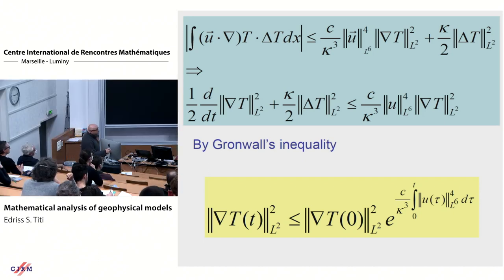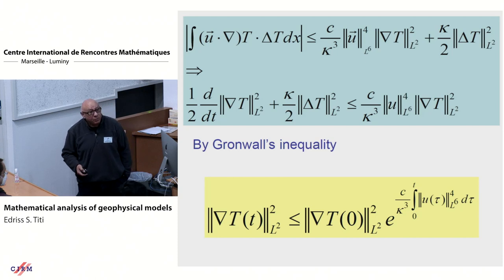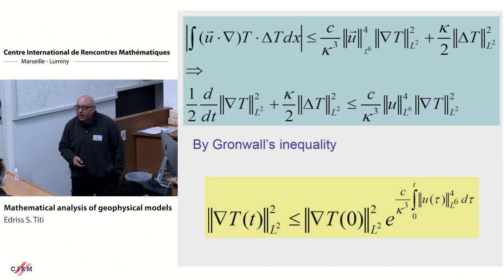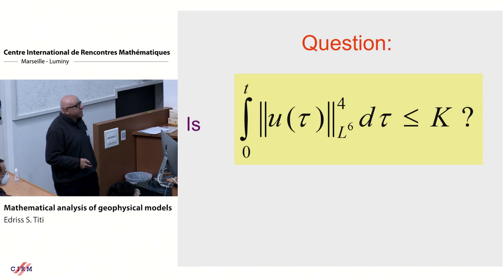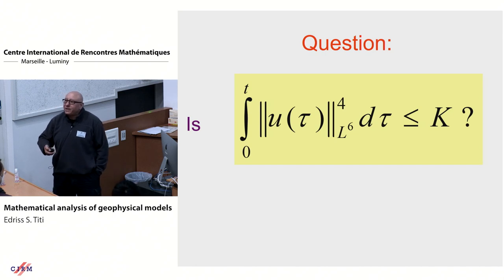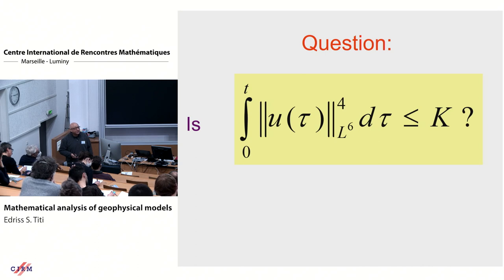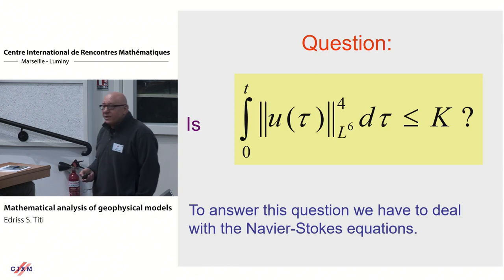Who tells me this exponent is finite? In order to show the temperature is bounded, there was no problem. But to show the gradient of the temperature is under control, I need to deal with the transport part — namely with the velocity field. The question becomes: is the integral of the L^6 norm of the velocity field to the power 4 finite? I have to go and deal with the fluid part, not just the diffusion — I need to deal with the Navier-Stokes equations.